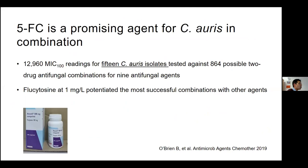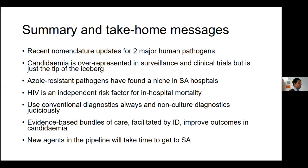There's also 5-flucytosine, a good old off-patent — though yet unregistered — agent in South Africa. It could be used in combination with amphotericin B for invasive candidiasis, as we use it for cryptococcal meningitis. Some research groups are interested in looking at the combination of amphotericin B and 5-FC.